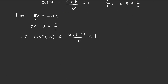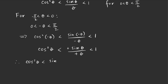Since cosine is an even function, cosine of negative theta equals cosine theta, so we get cosine squared theta. And since sine is an odd function, sine of negative theta is negative sine theta, giving negative sine theta over negative theta, which simplifies to sine theta over theta. So cosine squared theta is less than sine theta over theta, less than one, for all theta in negative pi over two to pi over two, excluding zero.